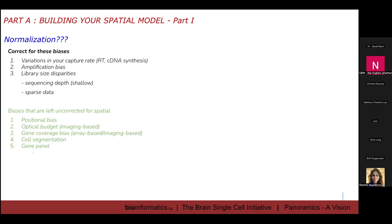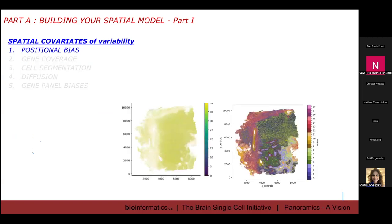Now, the biases that are left uncorrected for spatial, I'm going to go through some of these. Positional bias, you've already encountered one positional bias. One of the things that is going to emphasize this positional bias is your gene panel bias. So when we use a generic panel from 10X or from any of the platforms out there, they claim that it will be a generalist panel. But what is a generalist panel, really?